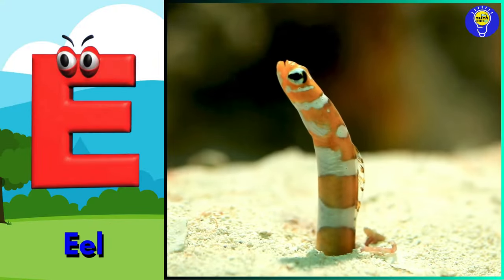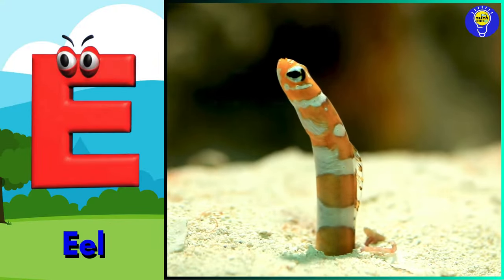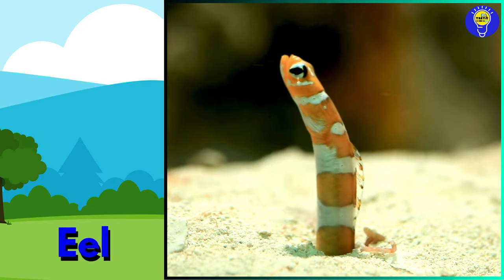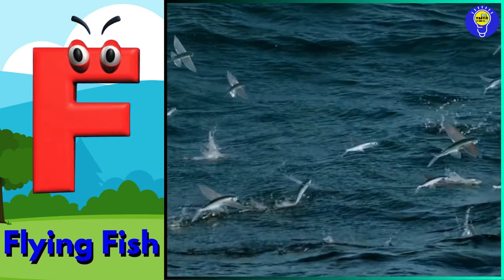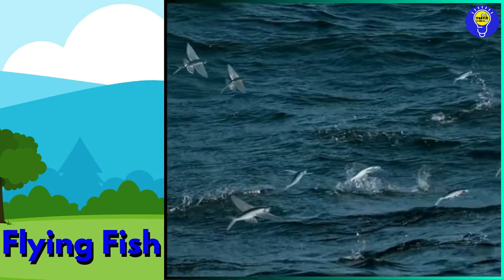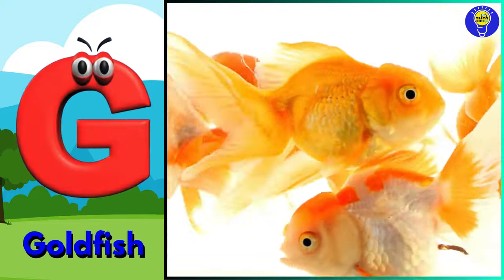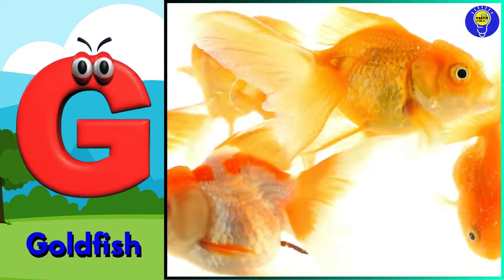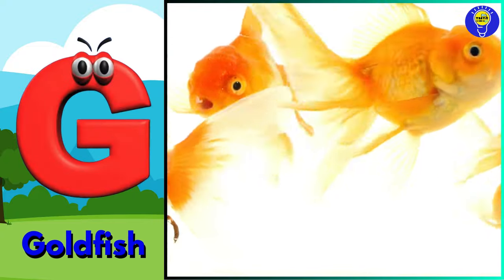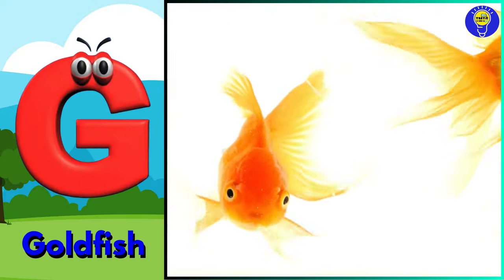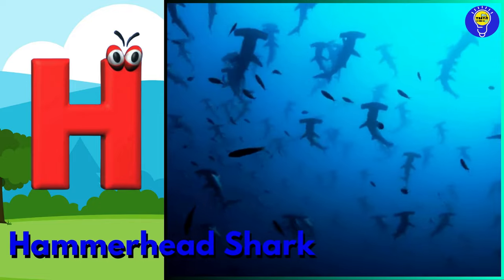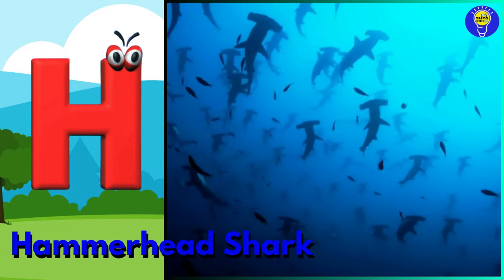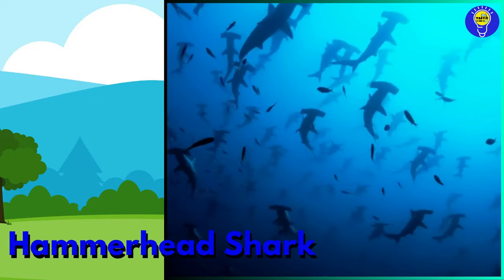E is for eel. F is for flying fish. G is for goldfish. H is for hammerhead shark.